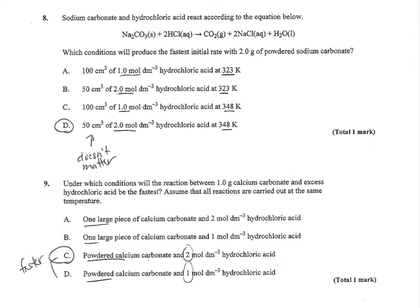Number 8: sodium carbonate and hydrochloric acid react. Which conditions will produce the fastest initial rate with two grams of powdered sodium carbonate? This reactant is held constant, so it's really all about the HCl and whether we use a catalyst or change temperature. The volume of HCl doesn't matter, the concentration does. It's either 1 or 2 molar. The 1 molar won't give as fast a rate, so either B or D with 2 molar. The difference is temperature, 323 and 348. So D, the warmer temperature will yield my fastest initial rate.